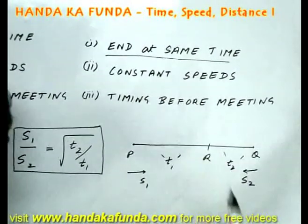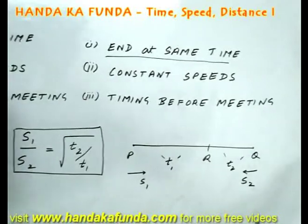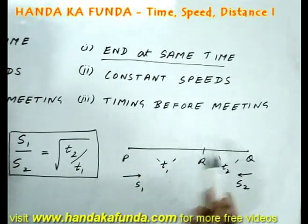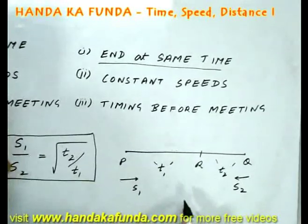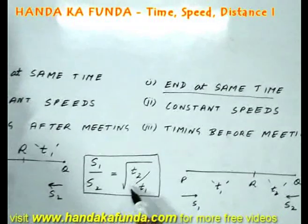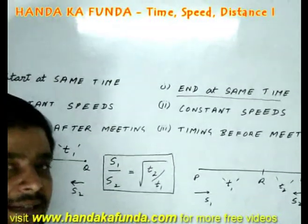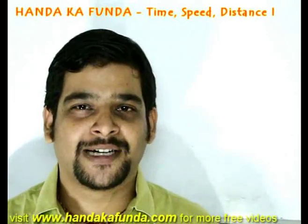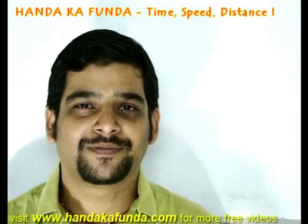Then, after they meet, suppose they meet at 3 o'clock and the journey finishes at 5 o'clock for both of them. So, both of them are taking 2 hours to finish it. So, that would be the same. In that particular case also, we can directly use the formula S1 by S2 is root of T2 by T1. Please stay with us to continue the discussion on time, speed and distance. Thank you.